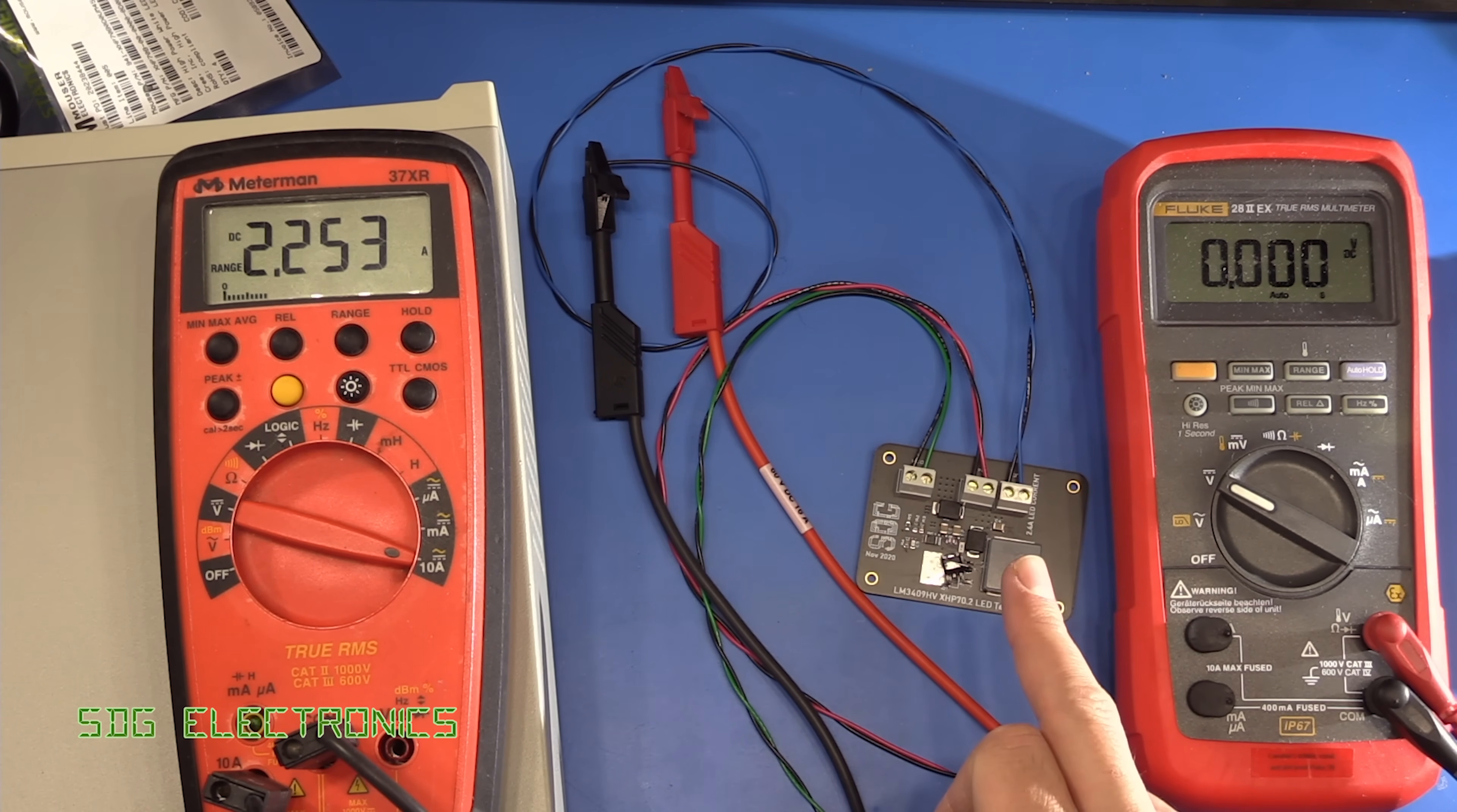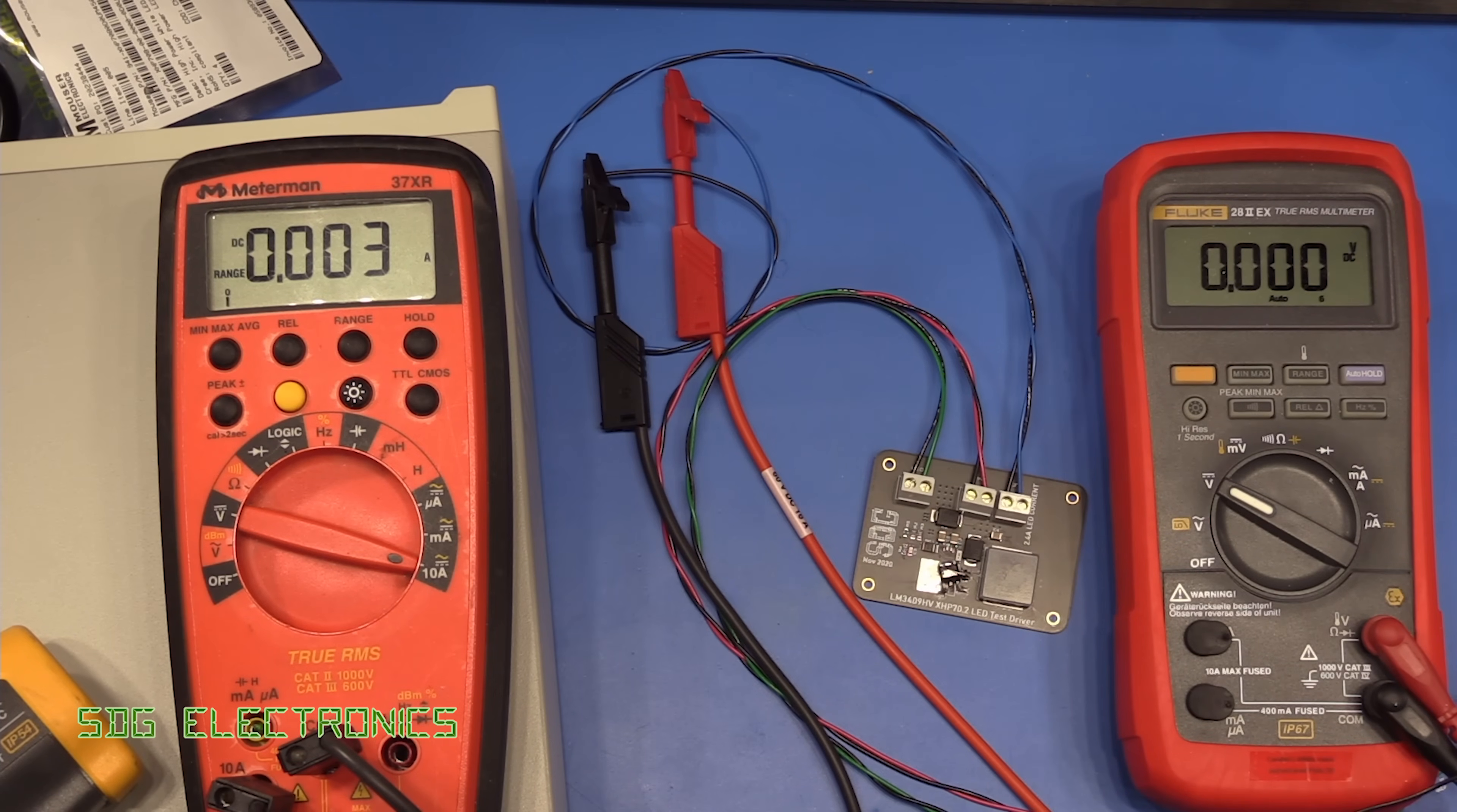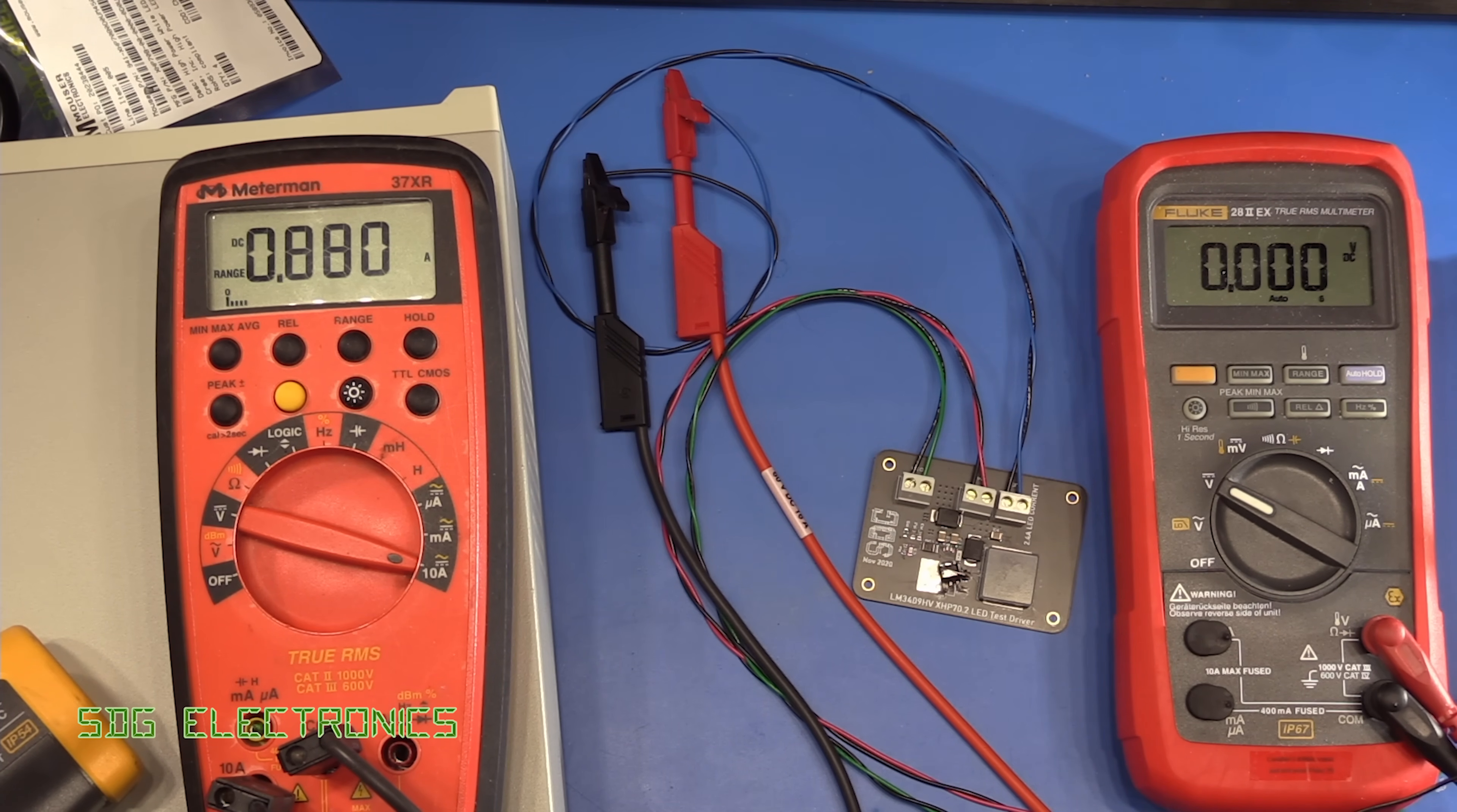What we'll just quickly also check is that the PWM input does indeed control the current. So yeah the PWM input seems to be working nicely as you can see. We've got nice control of the current. Very granular control there and then we can increase it quite rapidly. All the way up to 2.25 amps or so. So everything seems to be working fine there.